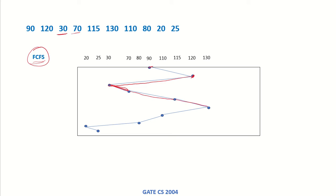Then the next request is 110, then 80, then 20, and then 25. So how many times has the head changed direction? Once here, second, third, and four. So four times the head has changed direction in first come first serve scheduling policy.